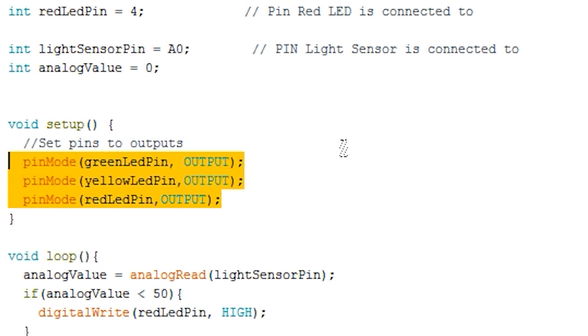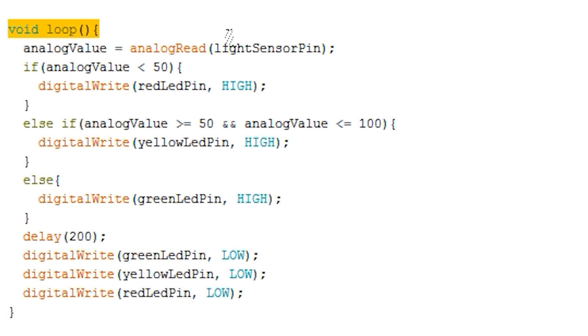The loop is pretty simple and shouldn't be too hard to understand. We first get the value from the analog pin, which is our photo resistor. Once we have a value, we compare and turn on the relevant LED. For example, the red LED will be on when it's dark, yellow for shady, and finally green for light. After this, delay for 200 milliseconds, turn all the LEDs to low, and then check again. Once you're done, simply upload it to the Arduino and your circuit should come to life.